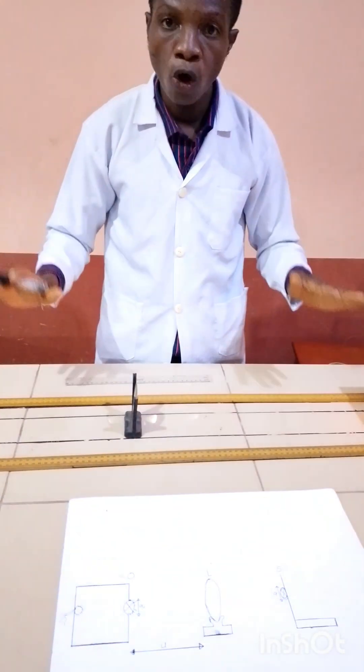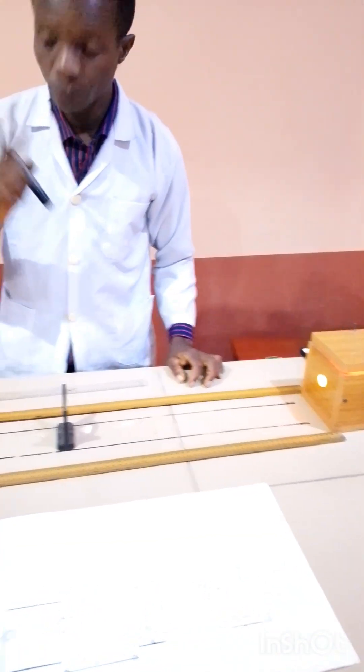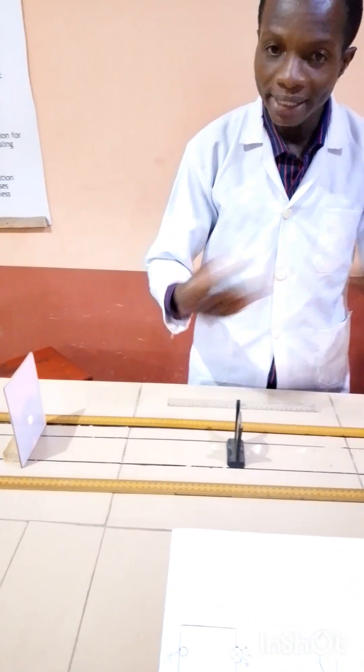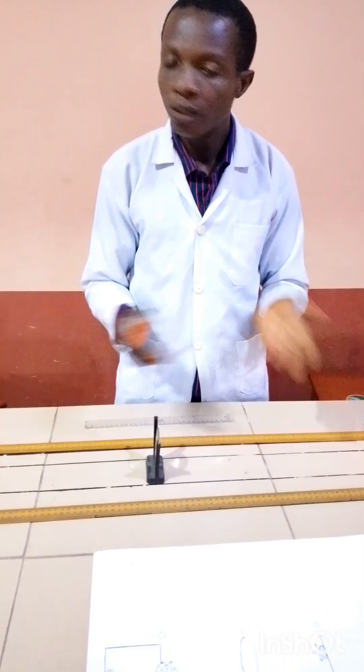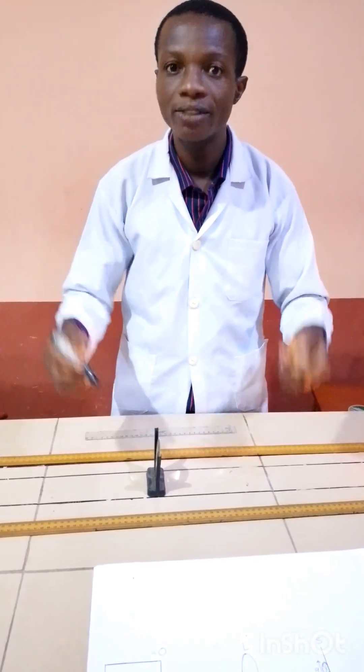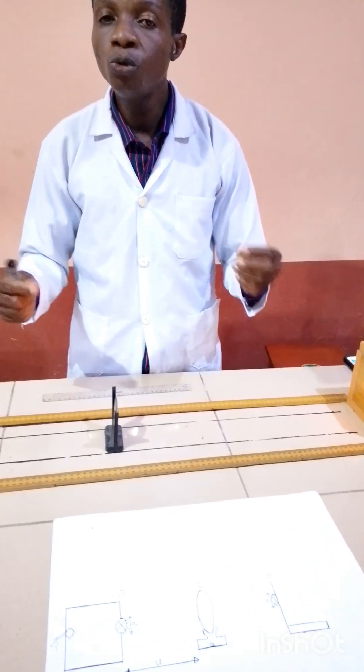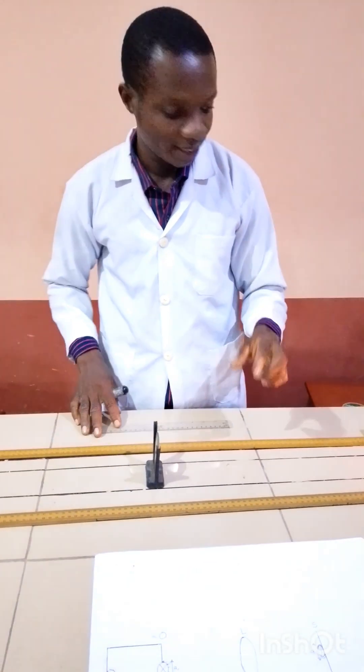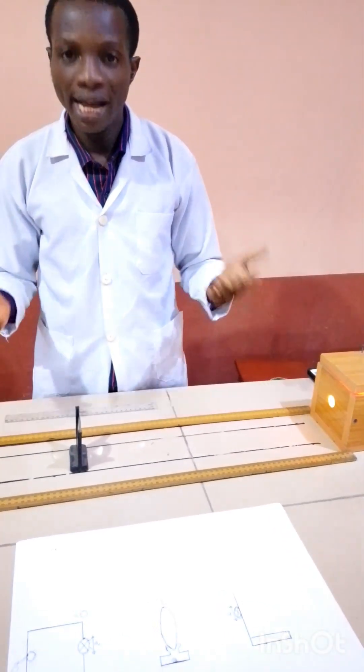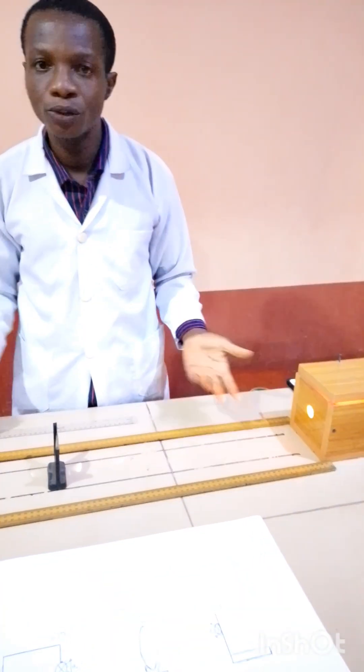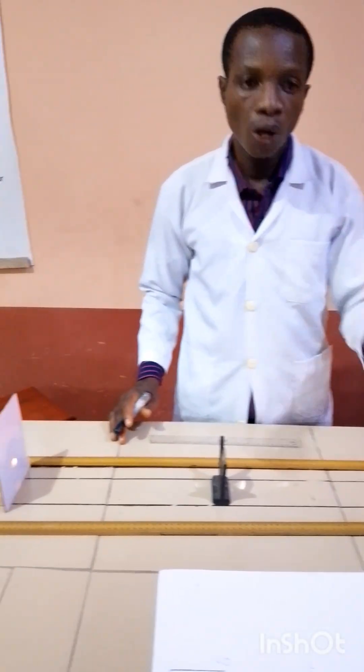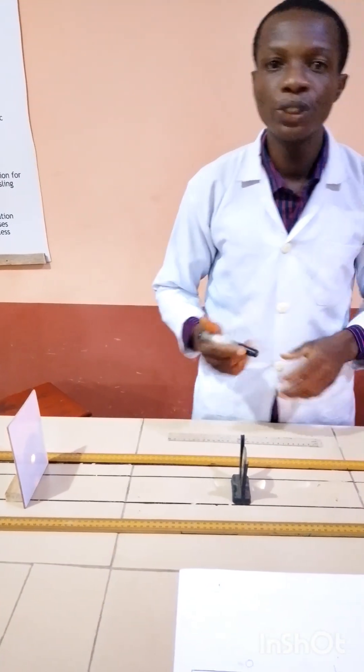Number one, the experiment setup is very easy. You can see that it's not complicated. Then, number two is that there is no complication. Our readings came very quickly. We just got our readings on time. Then, number three is that in the entire nation, you can tell that only few persons will perform this experiment. And that makes it favorable. Any student who does this is likely to do well because they might give the student preferential treatment.